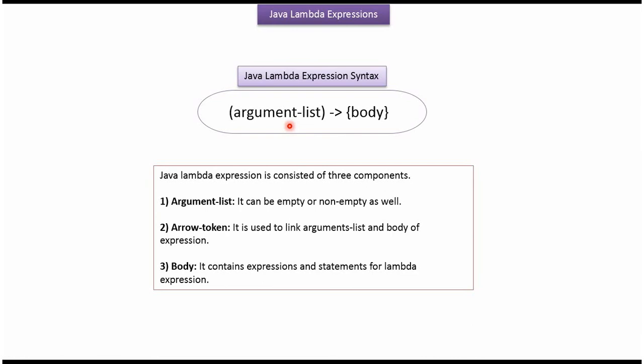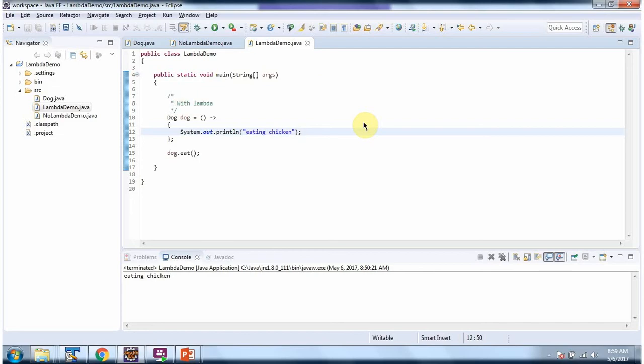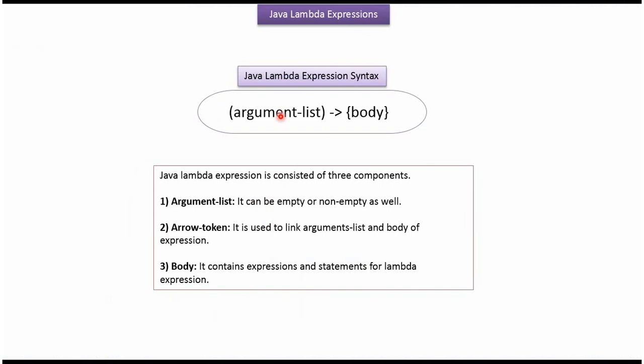Here you can see the Lambda expression syntax: ArgumentList, ArrowToken, and body. This is ArgumentList, ArrowToken, and body. ArgumentList can be empty or non-empty. Body contains the Lambda expression. ArrowToken is used to link ArgumentList with Lambda expression.